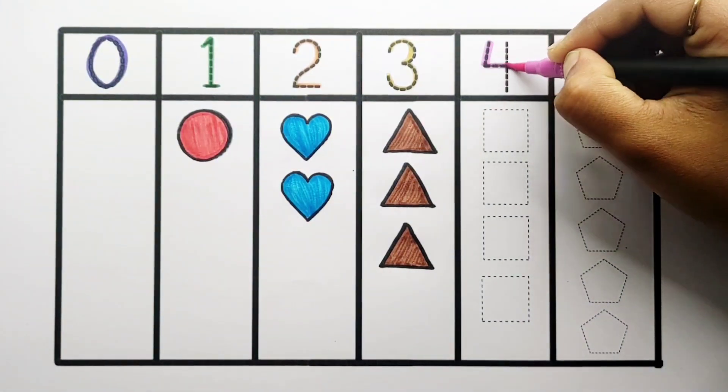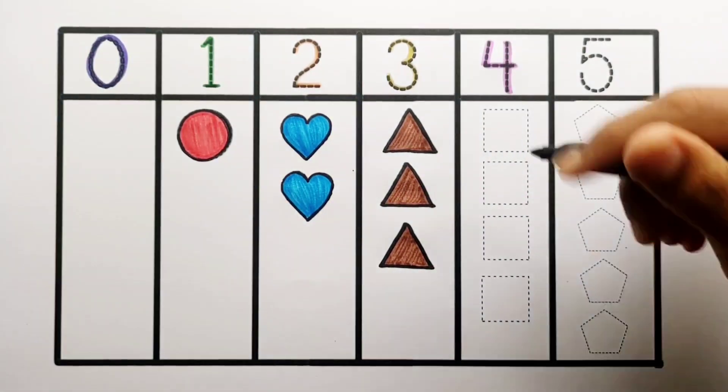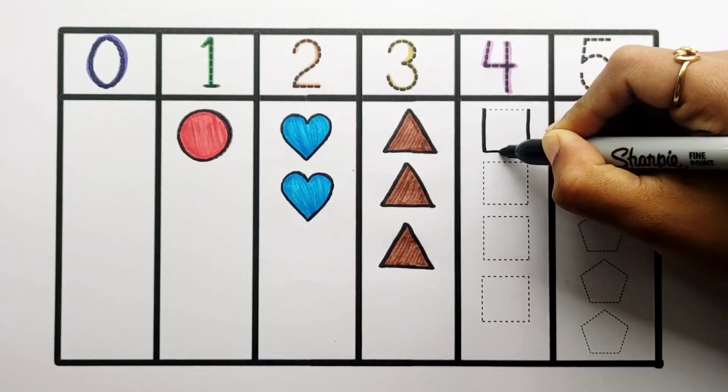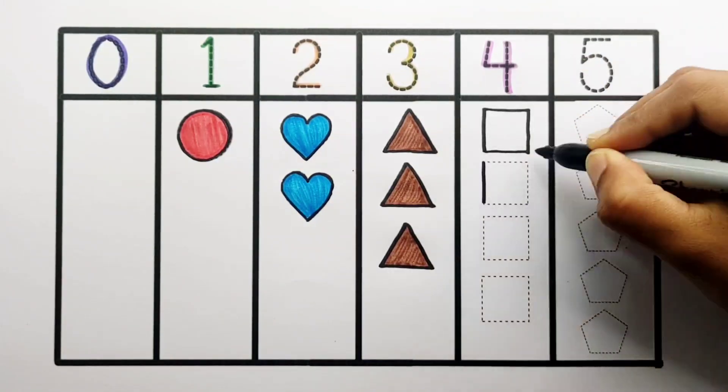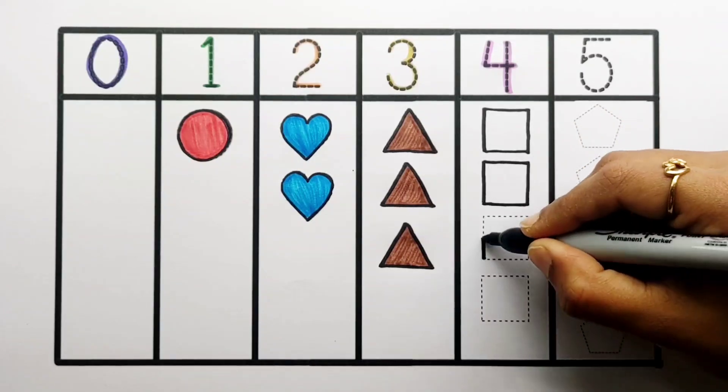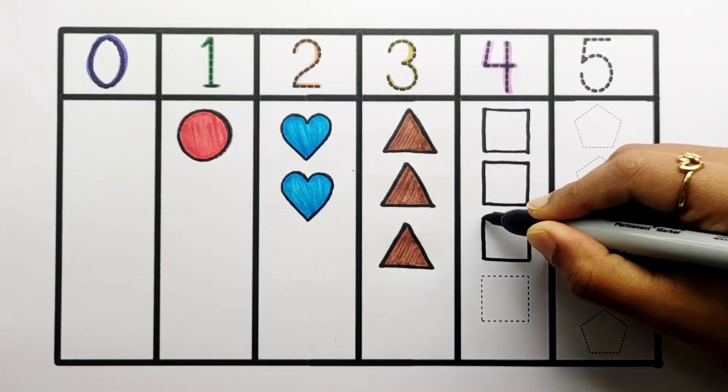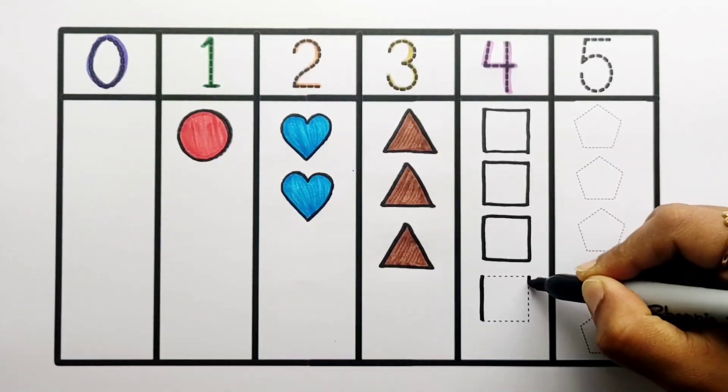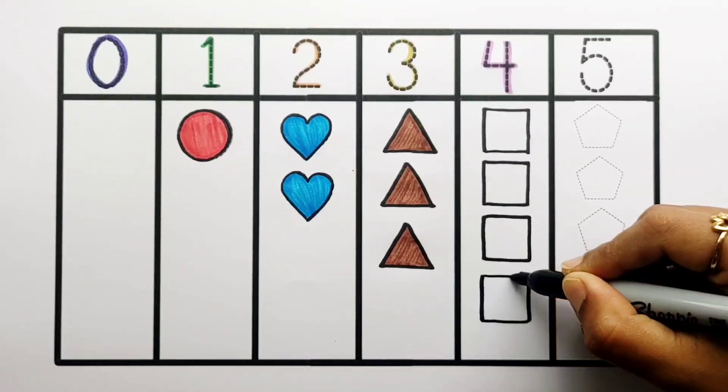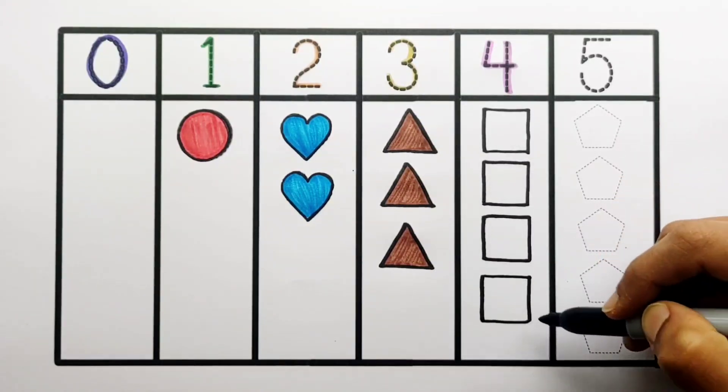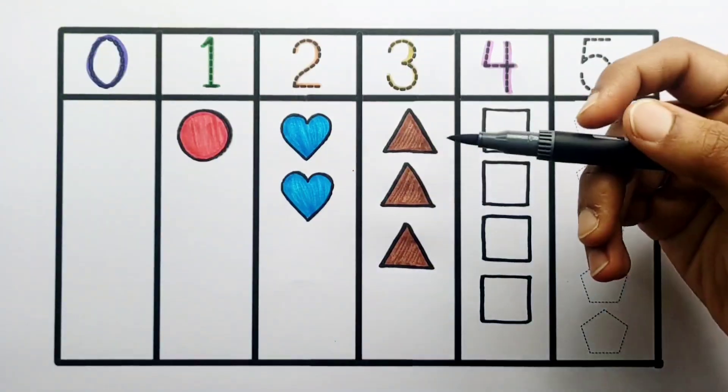Number 4. One, two, three, four - four squares, grey color.